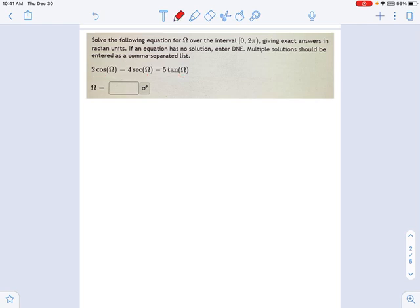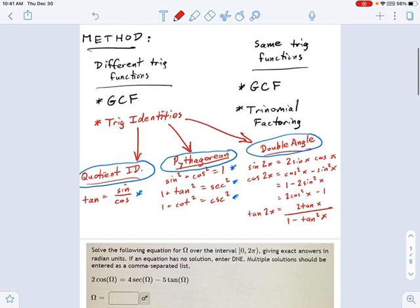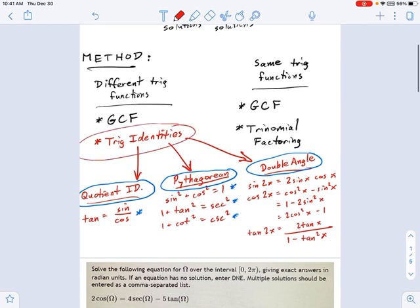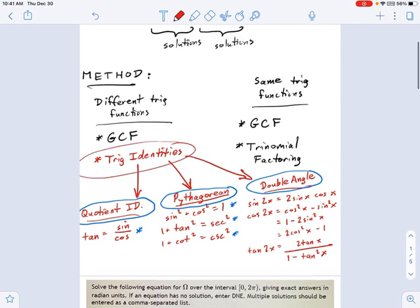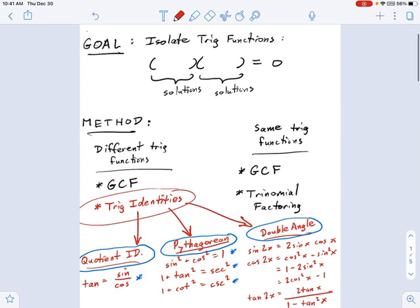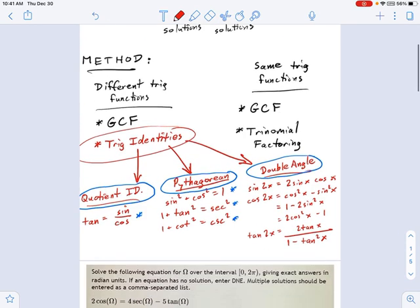And we have to sort out what we're going to do to solve this thing. Factoring is not going to work because there's no greatest common factors. There's obviously no trinomial terms. I don't have any squares.